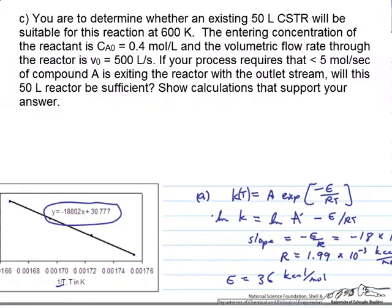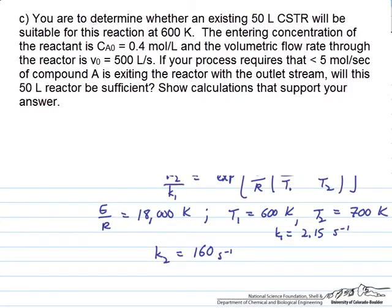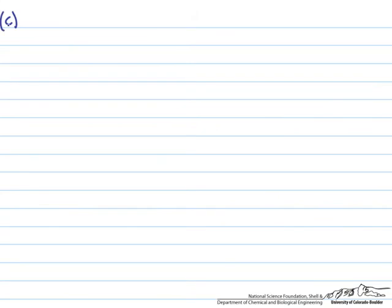Now we can look at part c of this problem. We're going to determine whether an existing 50 liter CSTR for this reaction will be suitable. This is at an isothermal temperature of 600 Kelvin. The entering concentration of the reactant is 0.4 moles per liter and the volumetric flow rate is 500 liters per second. We need conversion such that less than 5 moles per second of A exits the reactor. We want to determine if this is, I should have mentioned this earlier, this liquid phase reaction, figure out if this 50 liter reactor will be sufficient. We can't just answer yes or no, we have to do calculations.